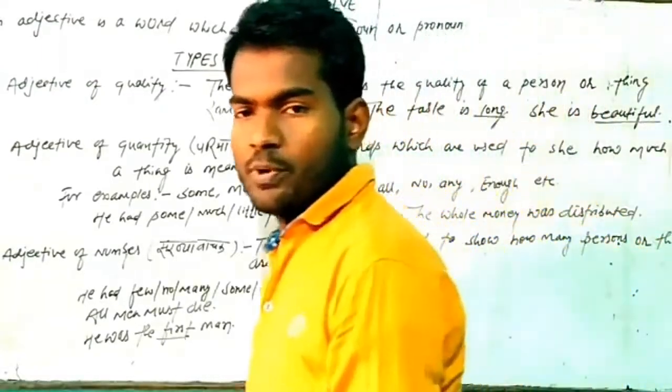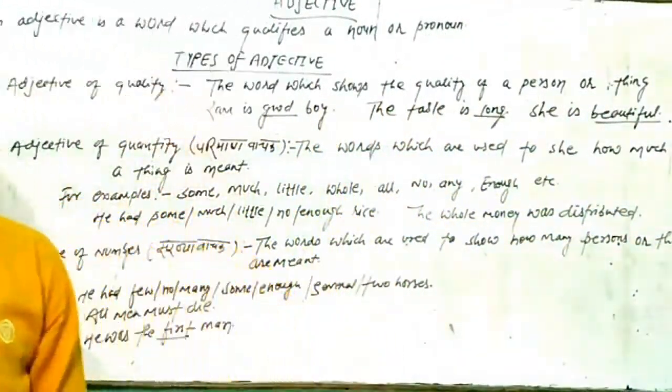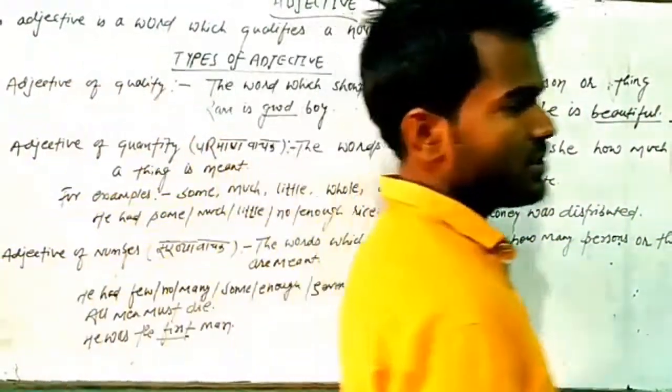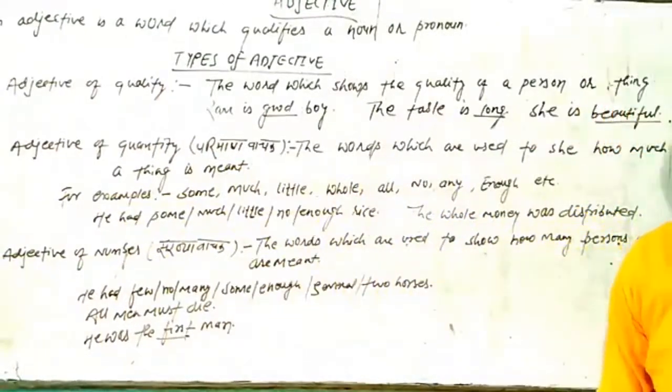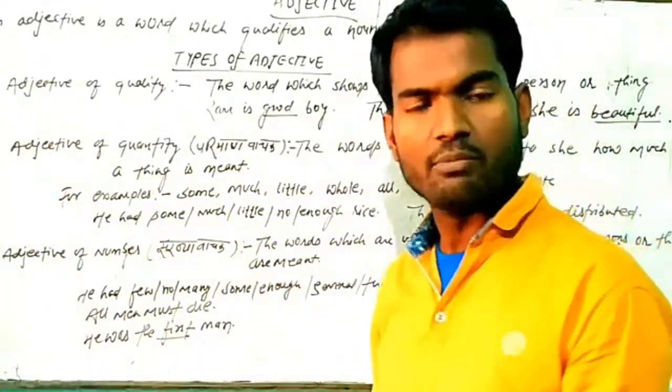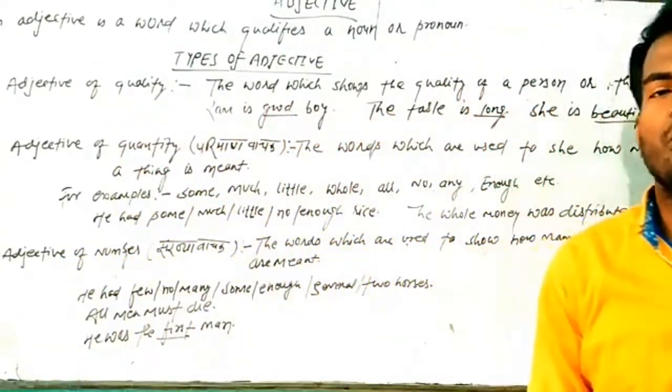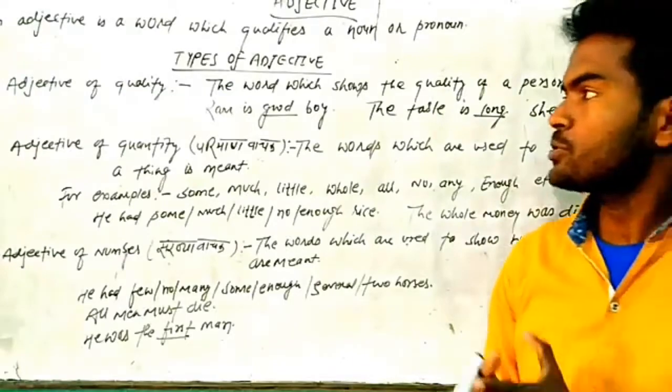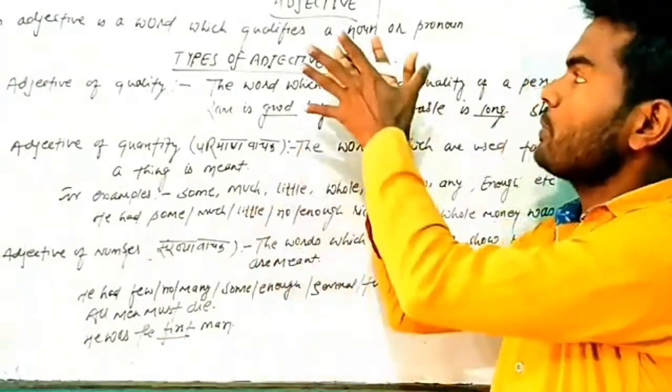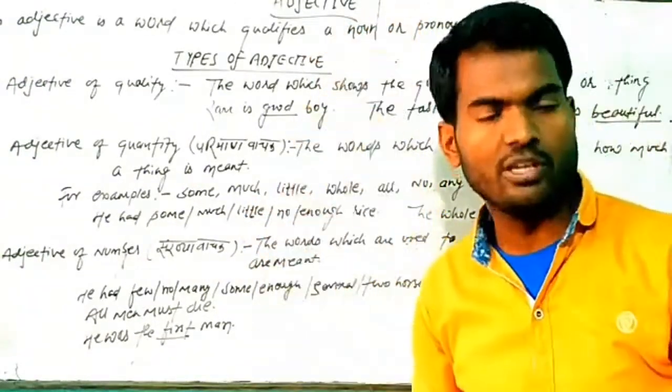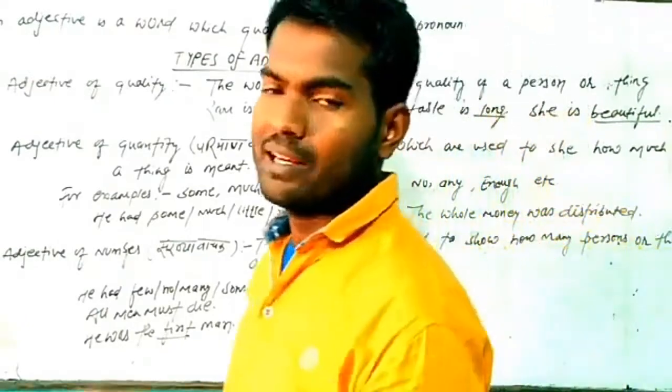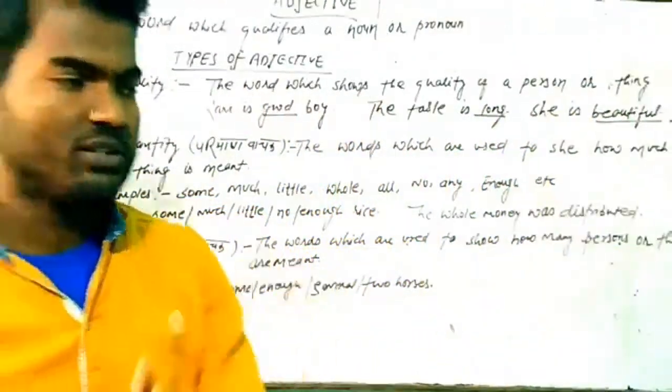So first of all we try to understand what is adjective. Subse pehle hum samjhaenge ki adjective hota kya hai. Adjective ka matlab hota hai bishishan. This is the third chapter of part of speech. So today we are just going to discuss this topic that is adjective. Adjective matlab hota hai bishishan.